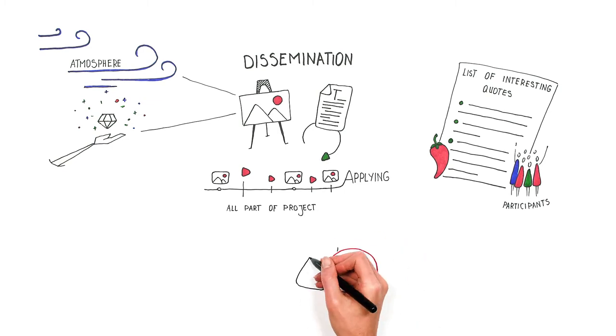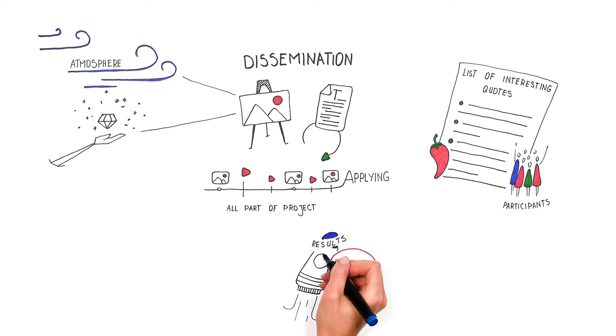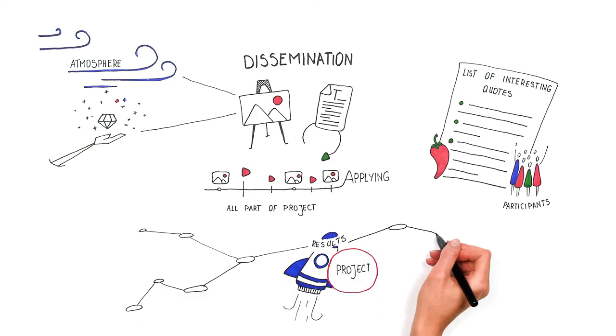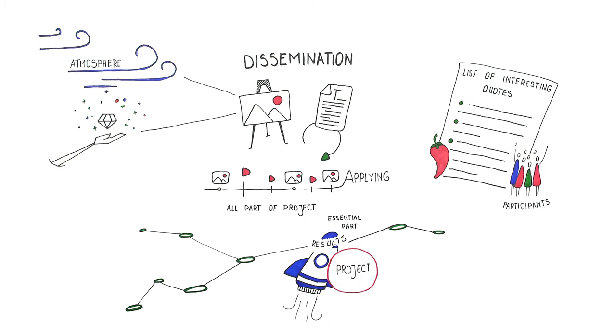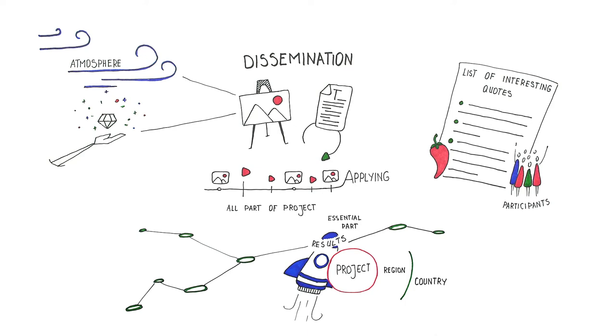Dissemination is quite challenging for organizations as youth workers tend to focus more on the implementation of the project than on the sharing of results. Therefore, you should also consider dissemination as an essential part of implementation rather than an appendix to your project. Good dissemination allows your project to be successful and known to a wide range of stakeholders in your region, your country, or in Europe.